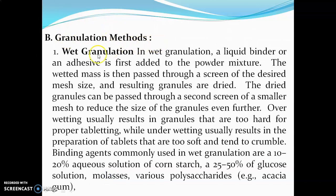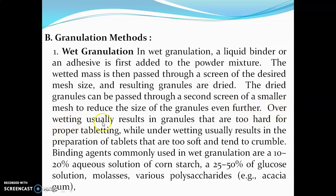Granulation methods: the first method is wet granulation. In wet granulation, a liquid binder or adhesive is first added to the powder mixture. The wetted mass is then passed through a screen of the desired mesh size, and the resulting granules are dried. The dried granules can then be passed through a second screen of smaller mesh to reduce the size further.